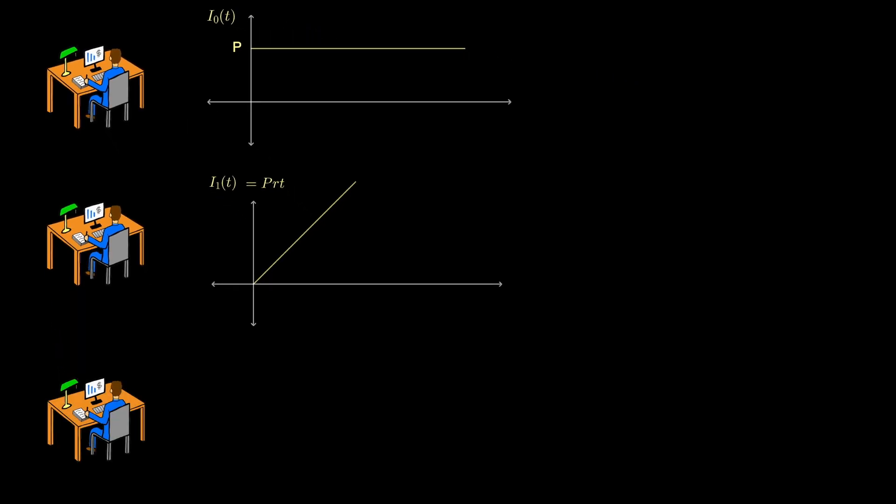But things get more complicated when we try to calculate the secondary interest. This is because the primary interest is not constant. It's linear. So how do we calculate the interest it generates?